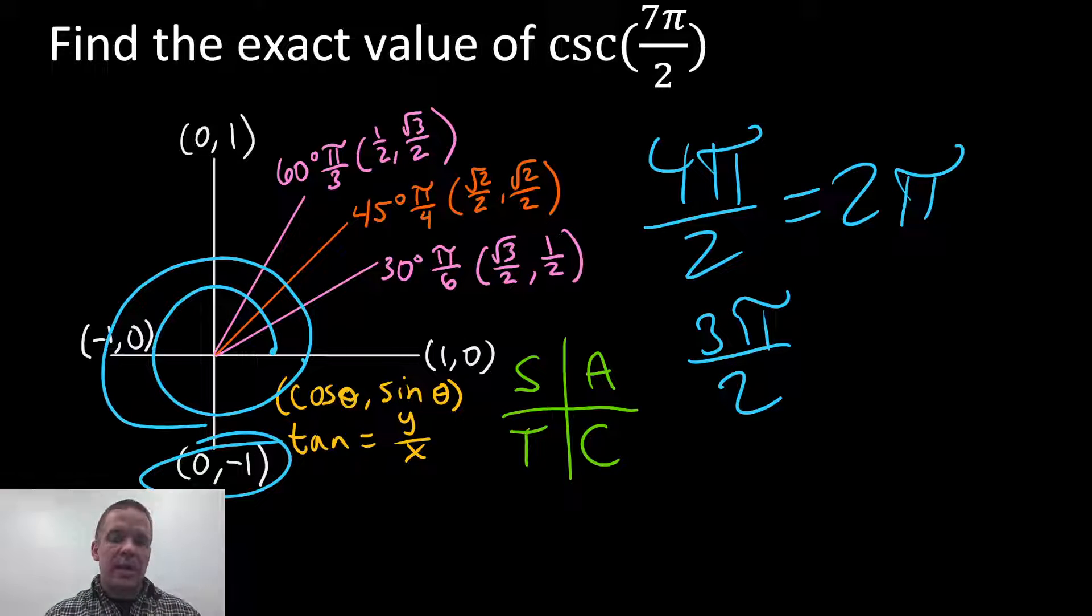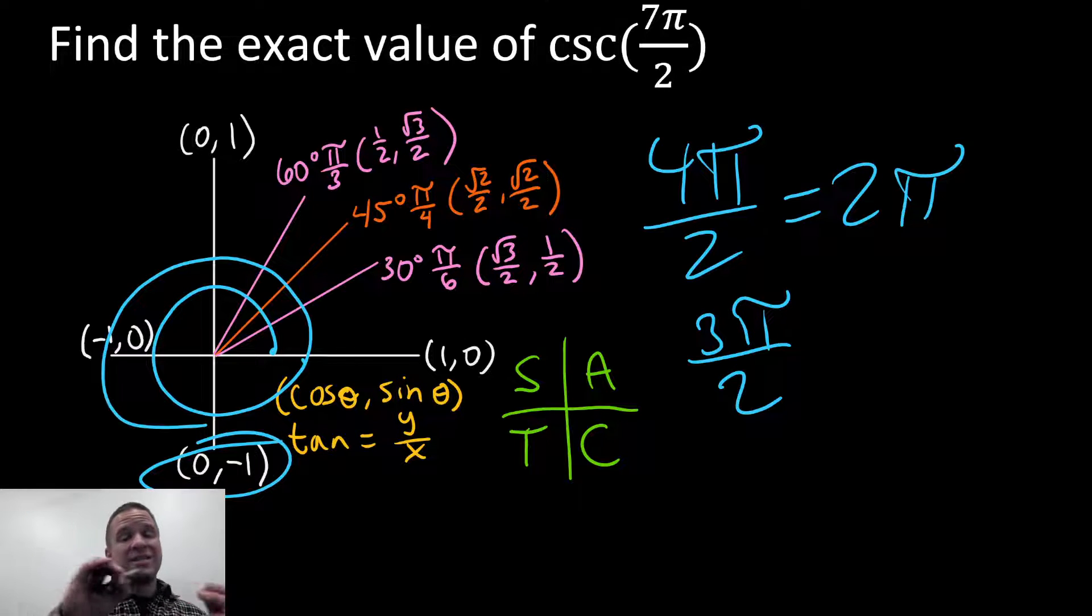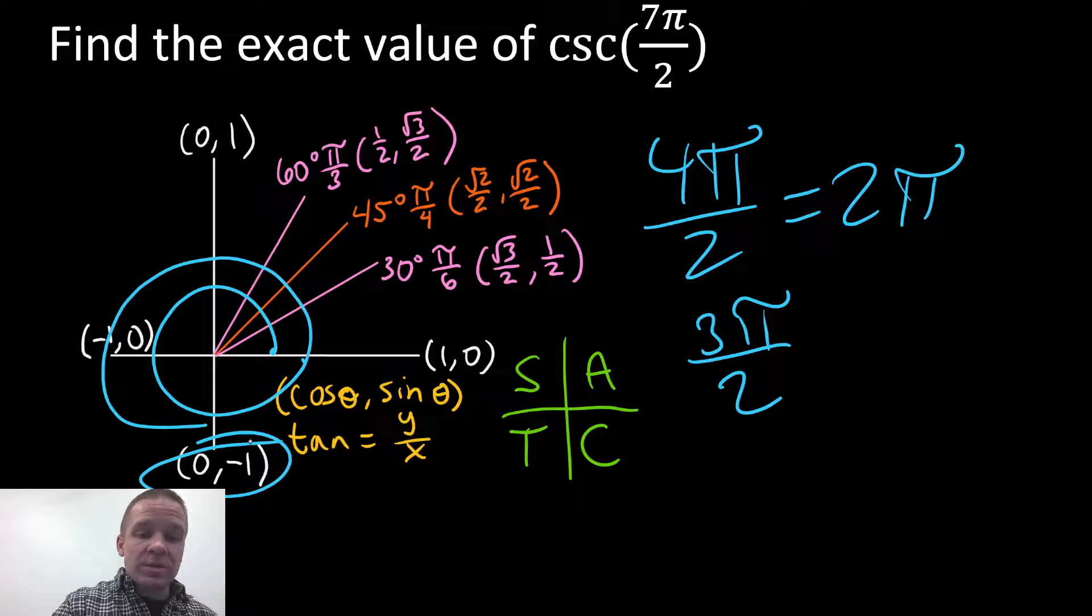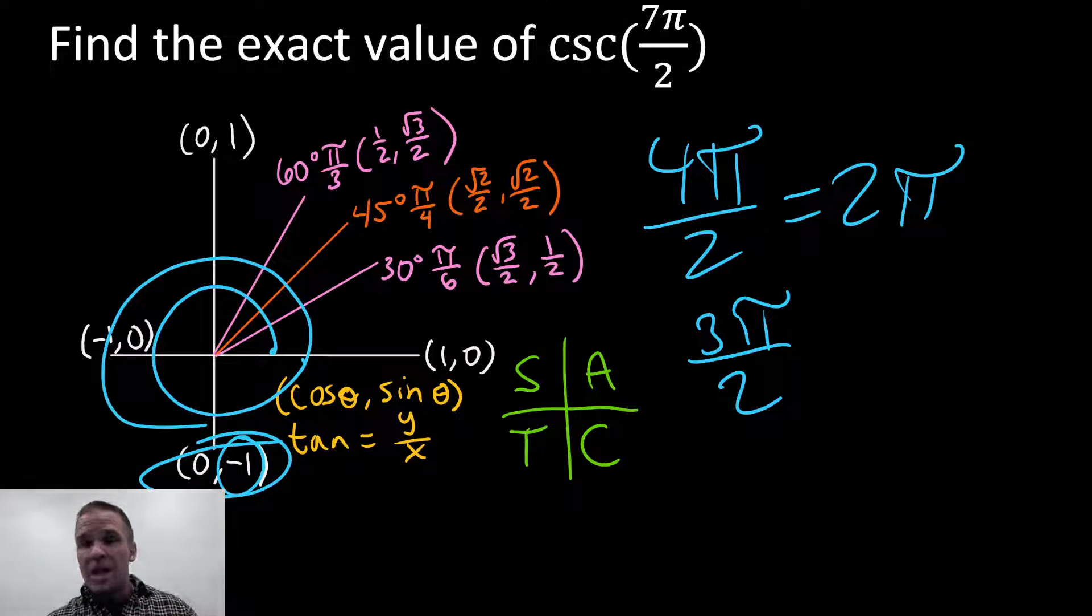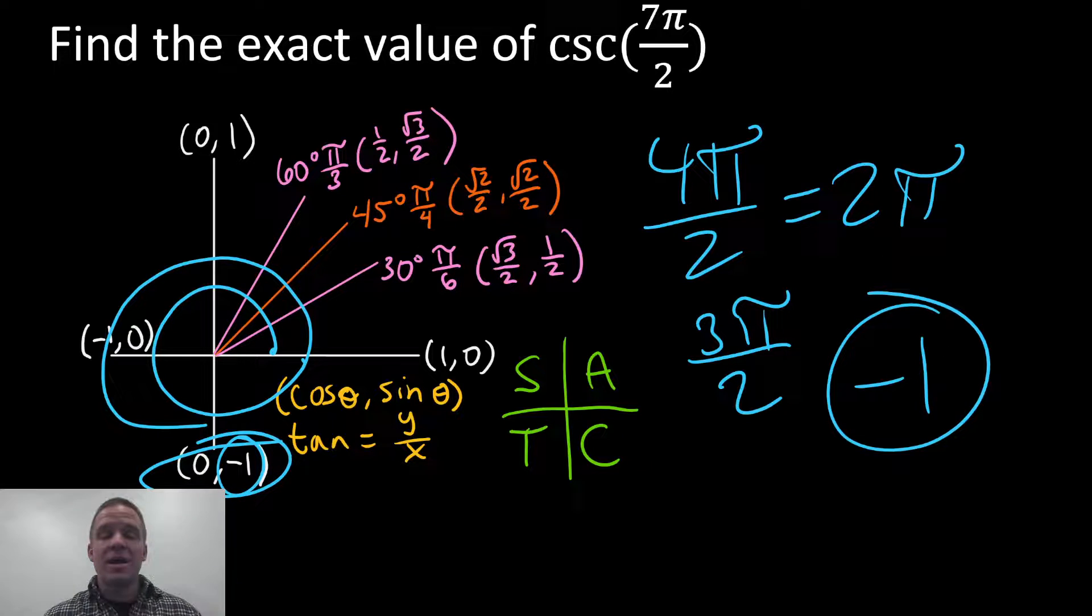Now, cosecant is my reciprocal of sine, right? Cosecant is the reciprocal of sine, which is my Y coordinate. What is the reciprocal of negative one? The reciprocal of negative one is still negative one. It stays.